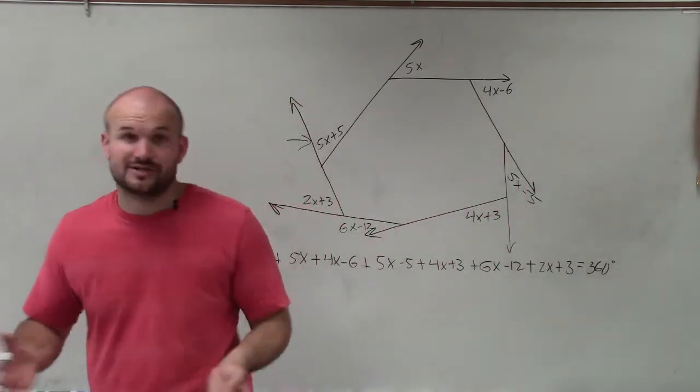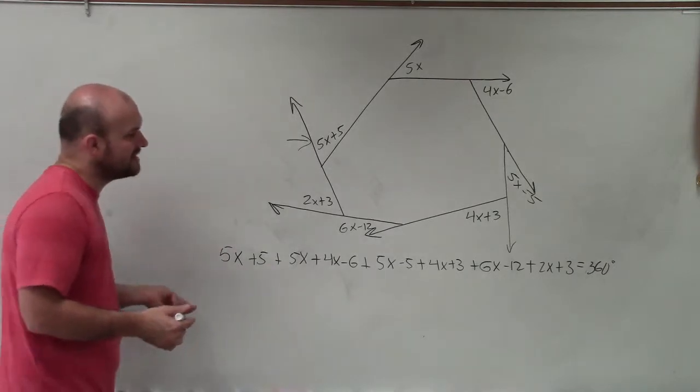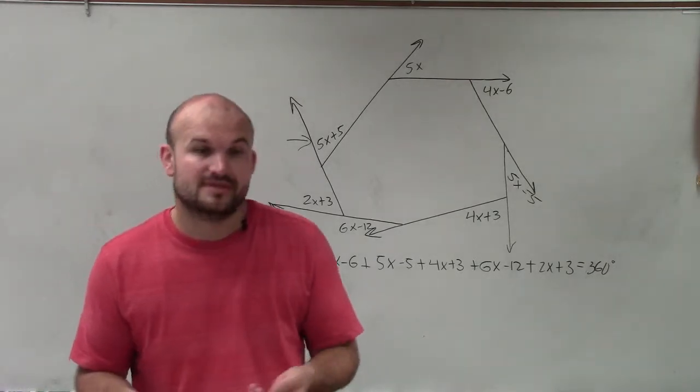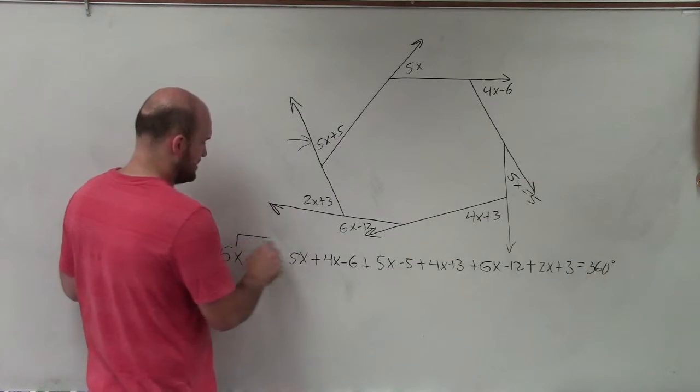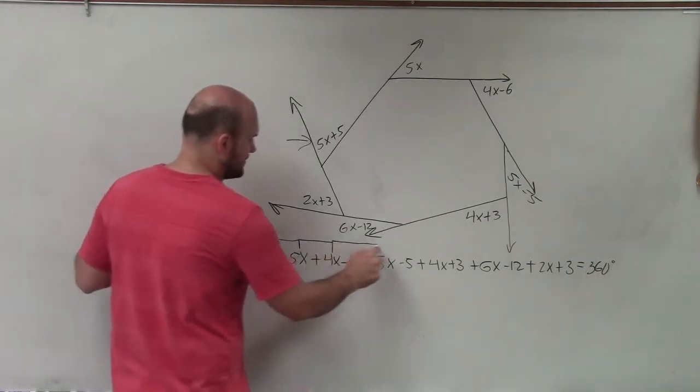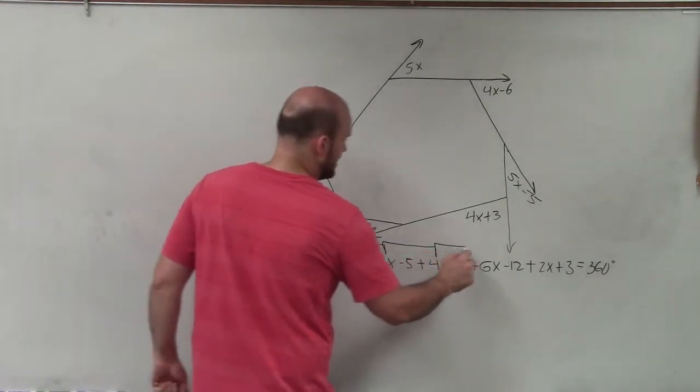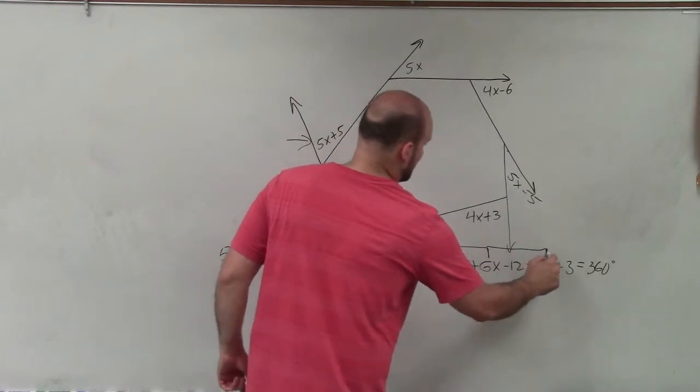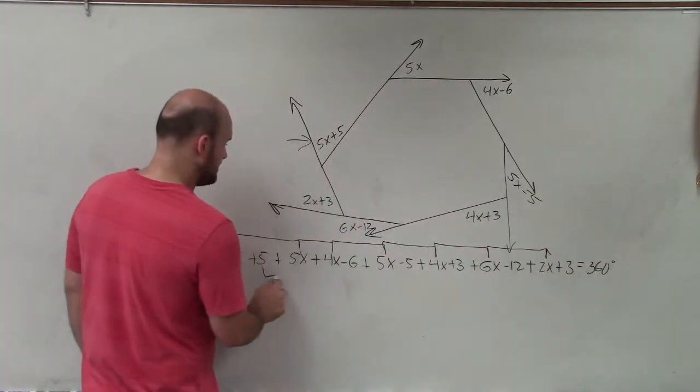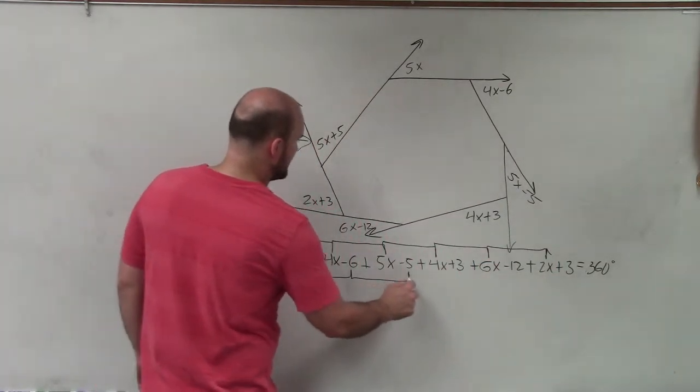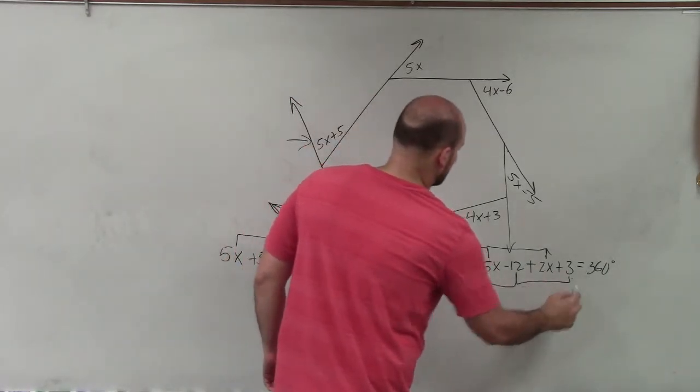So I have this big long equation and I can easily break this down by combining like terms. Remember, all the terms that have x's I can combine those together. I can do that in my head but I want to label them to make sure that I'm not making a mistake. I can also combine all of these numbers together.